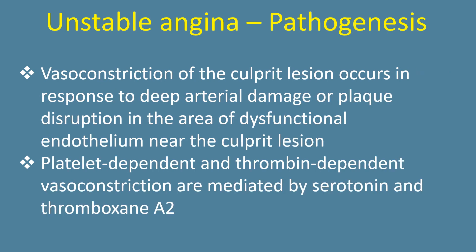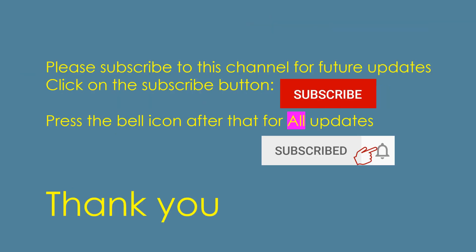Vasoconstriction of the culprit lesion occurs in response to deep arterial damage or plaque disruption in the area of dysfunctional endothelium near the culprit lesion. Platelet-dependent and thrombin-dependent vasoconstriction are mediated by serotonin and thromboxane A2.